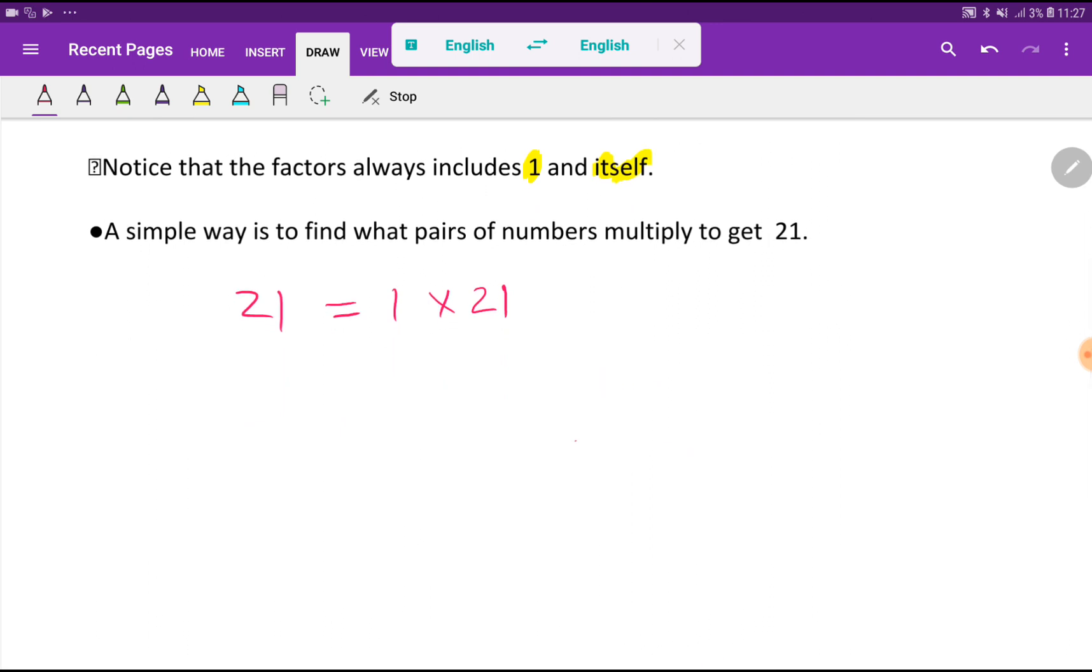Now find out the other factors of 21. So you have gotten here two factors, right? You have to write the lowest factor here and then the highest factor here. Then what will you do? You have to take here 2, then you have to check whether 21 is divisible by 2 or not.